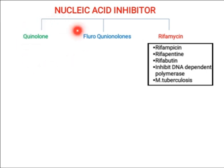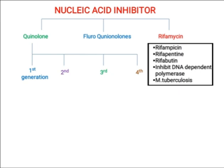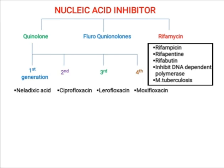If we talk about quinolones, they have different generations: first, second, third, and fourth generation. First generation includes nalidixic acid; second generation includes ciprofloxacin; third generation includes levofloxacin; and fourth generation includes moxifloxacin. These antibiotics target and inhibit gyrase and topoisomerase.